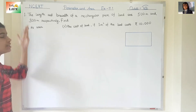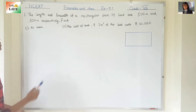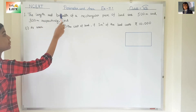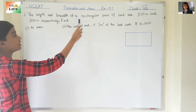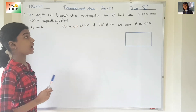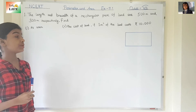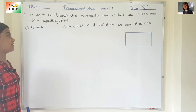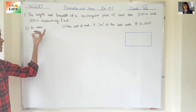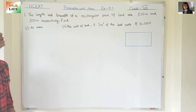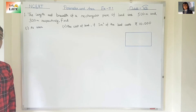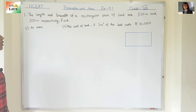Let's start with the first question. The length and breadth of a rectangular piece of land are 500 meters and 300 meters respectively. Find: number one, its area, and number two, the cost of the land if one meter square of the land costs rupees 10,000.